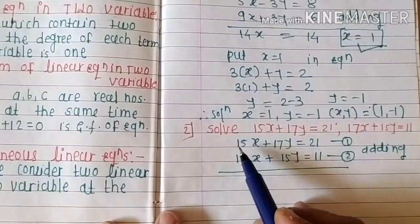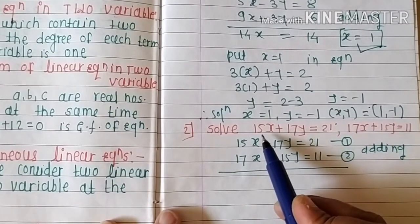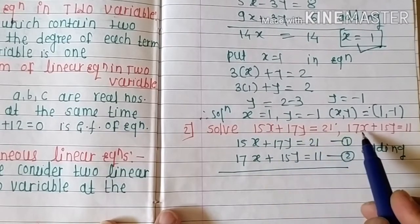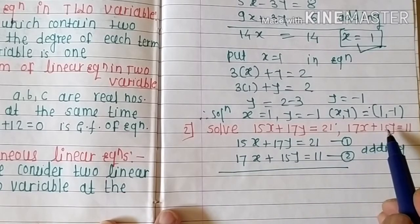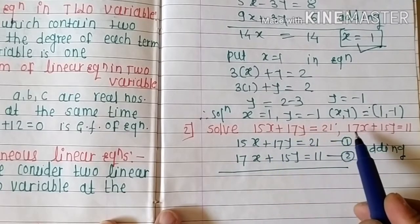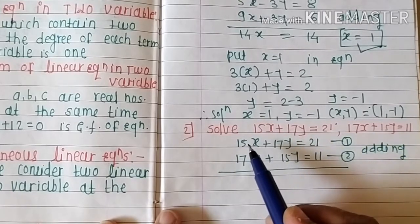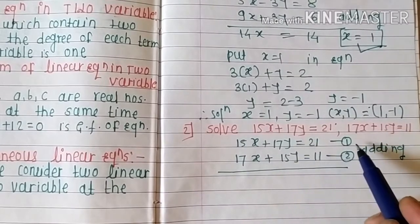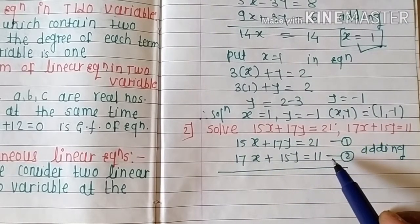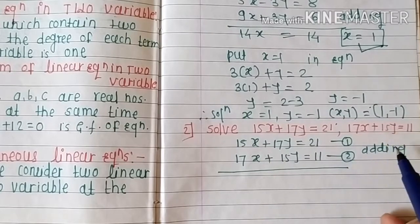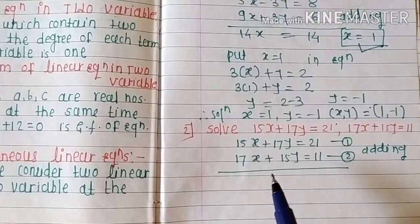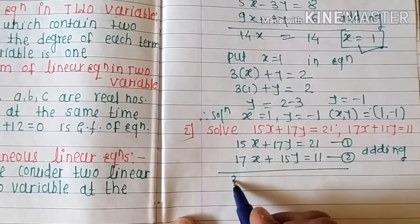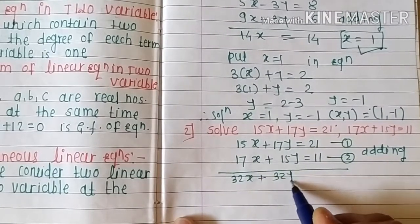In the next example, observe that the coefficient of x is 15 and coefficient of y is 17 in equation one, and in equation two the coefficient of x is 17 and y is 15 — they are interchanged. For such a type of simultaneous equation, always first take addition to get one equation, then take subtraction to get a second equation, and solve those two.